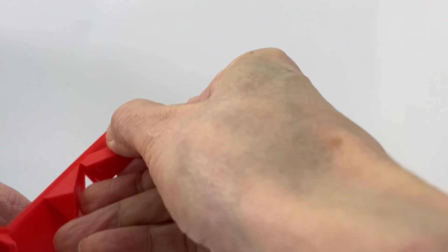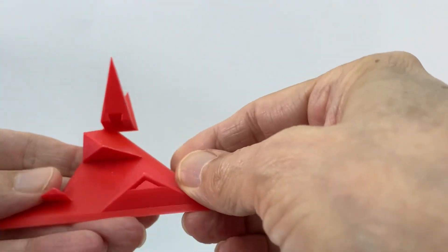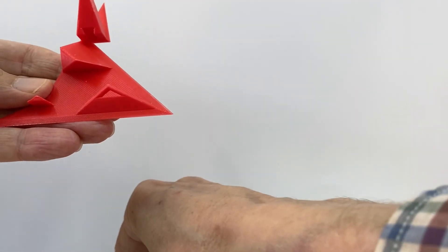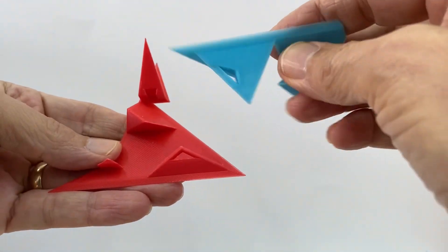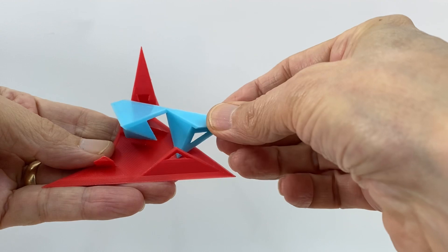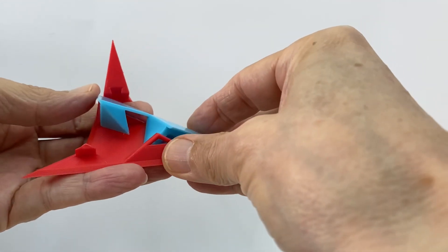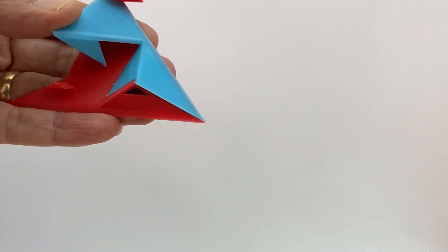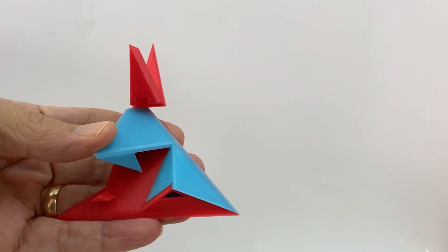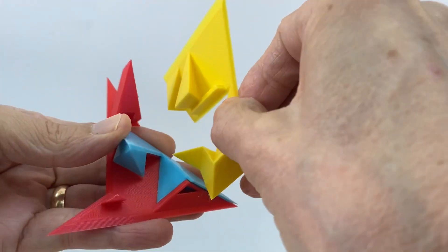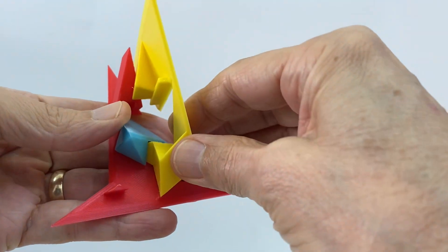So to assemble it, starting with the red piece, you then need to twist in one of the blue pieces and slide in the yellow piece.